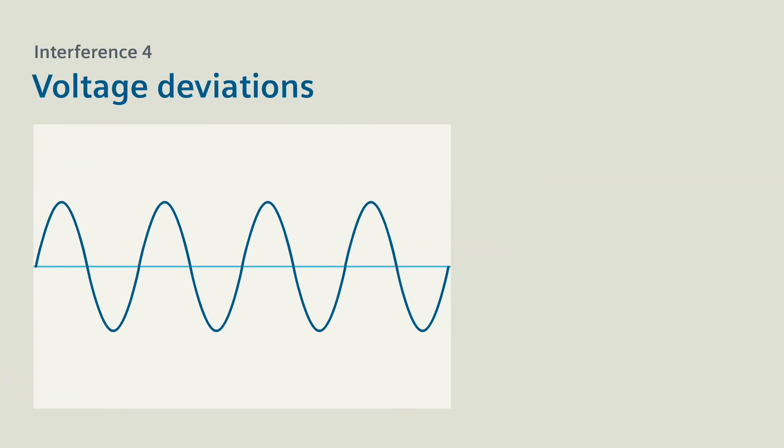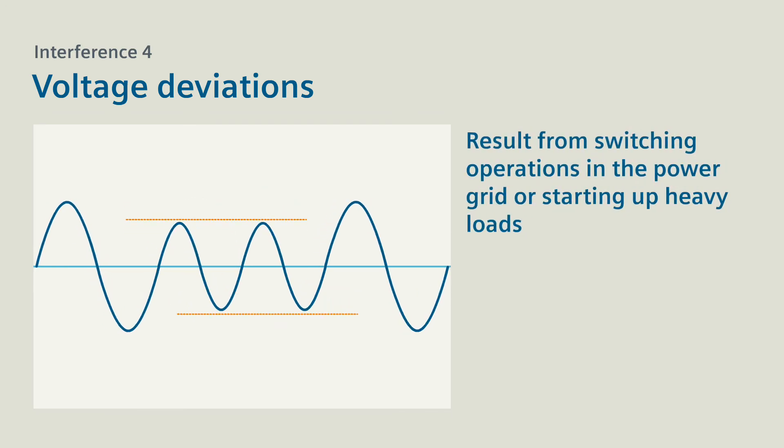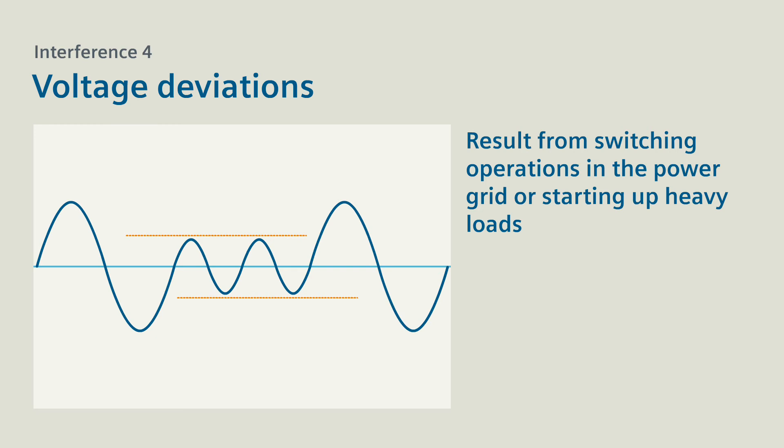Interference 4: Voltage deviations. Among other things, voltage deviations result from switching operations in the power grid or starting up heavy loads. As a result of voltage deviations, efficiencies of an electrical system may be reduced, or it may be shut down due to an under-voltage trip.